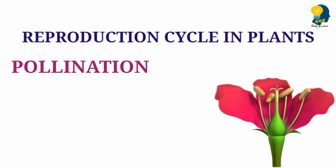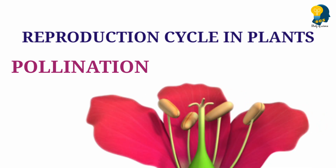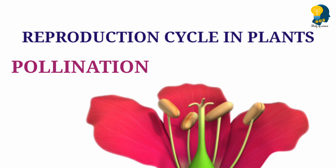Pollination means the transfer of pollen grains. It is the process where the pollen grains get transferred from the anther of the flower to the stigma of the flower. During the process of pollination, the pollen grains present in the anther get transferred to the stigma, which is the female reproductive organ of the flower. The transfer of pollen grains from the anther to the stigma is called pollination.